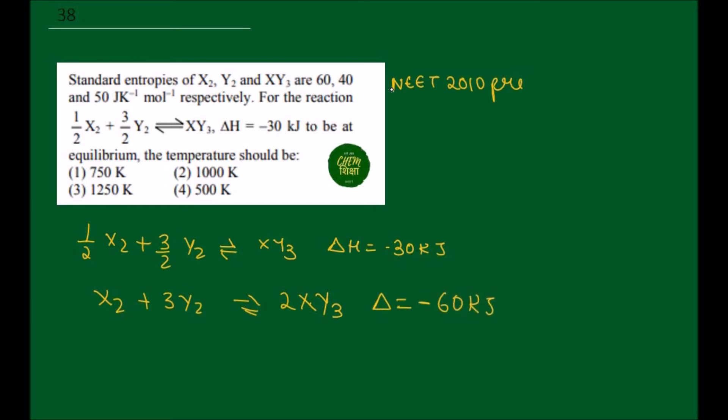Now we know that delta entropy of the reaction is equal to sum of delta entropy of products minus sum of delta entropy of the reactants.